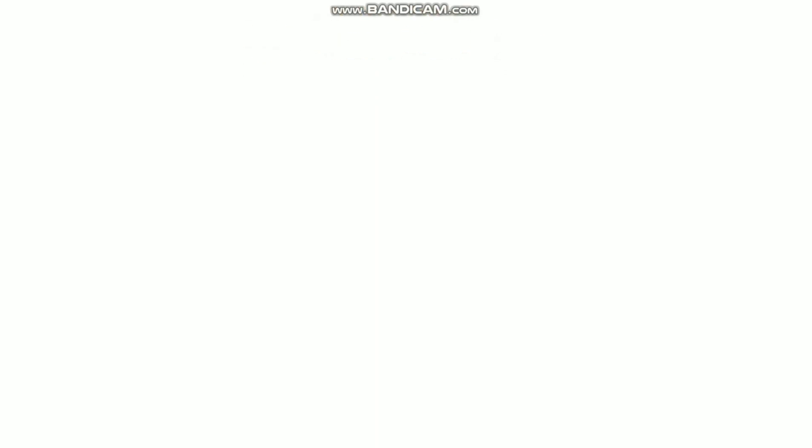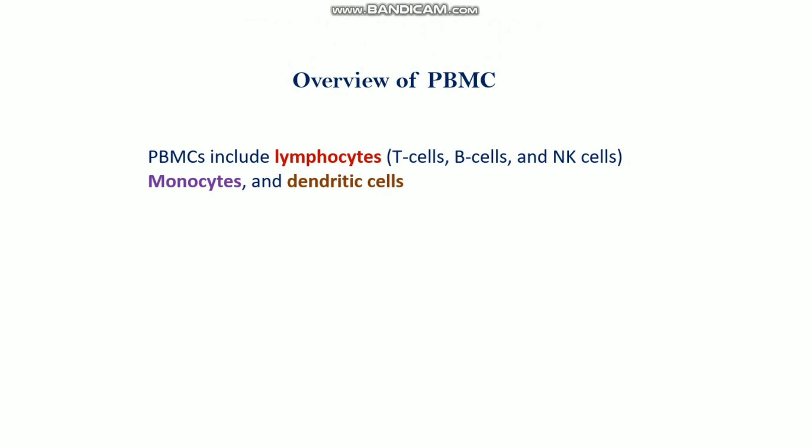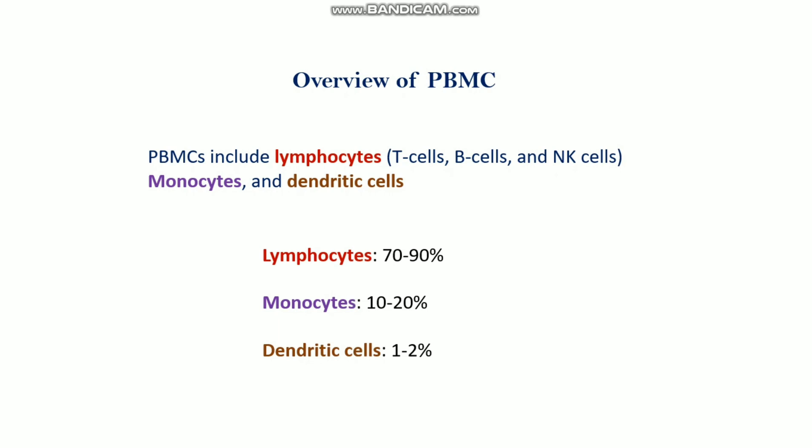First we need to know about the PBMC. PBMC includes lymphocytes — that are the T cells, B cells, and NK cells — and also monocytes and dendritic cells. In brief, the PBMC includes lymphocytes, monocytes, and dendritic cells, and the range of these cells varies from individual to individual.